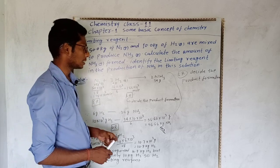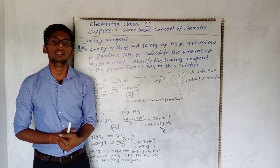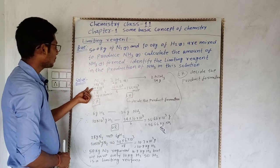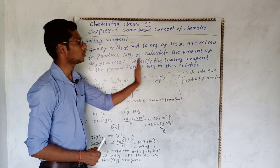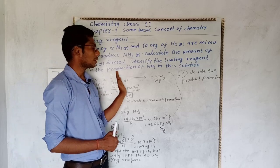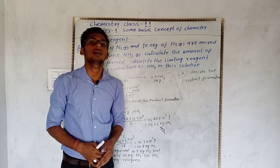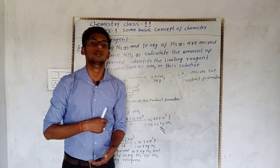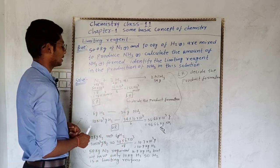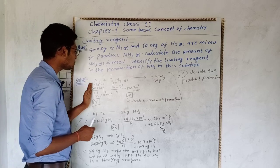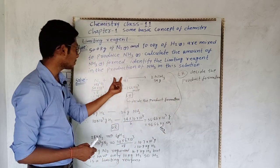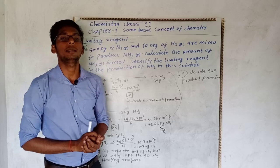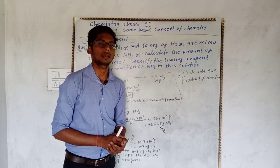Method 3: दोनों reactants से separately calculate करो कि कितना ammonia produce होगा। जिस reactant से ammonia कम produce होगा वही limiting reagent होगा। N2 के 50 kg से कितना ammonia बनेगा, और H2 के 10 kg से कितना ammonia बनेगा - दोनों values निकालो। जिसकी value कम आएगी वही limiting reagent होगा।